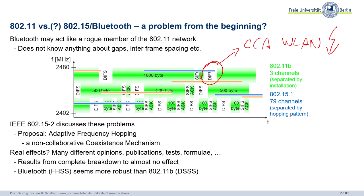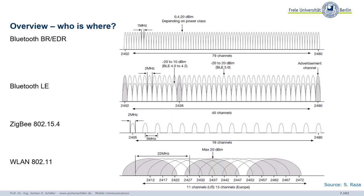There was a lot of testing, many opinions, and differing conclusions: some papers said the network breaks down completely, others found almost no effect. It seems Bluetooth's frequency hopping is more robust compared to direct sequence spread spectrum used in 802.11b. Looking at the spectrum, we see classic Bluetooth with 79 channels, Bluetooth Low Energy with its advertisement channels, ZigBee with 16 channels at a different channel spacing, and wireless LAN with three non-overlapping channels — all sharing the 2.4 GHz band.